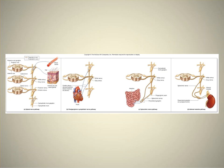In the splanchnic nerve pathway, the preganglionic axon goes through the white ramus of the ramus communicans and through the sympathetic chain ganglion, but does not synapse there. The postganglionic cell body is instead in a collateral ganglion — in this case the pre-vertebral ganglion — and the postganglionic fiber then goes to the effector organ, in this case the intestine.